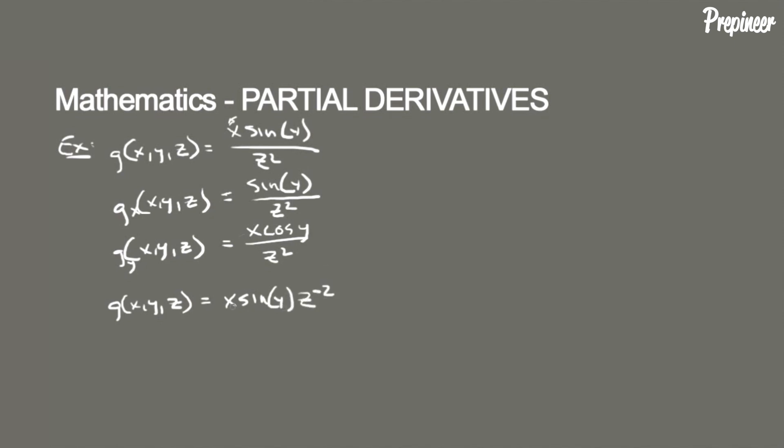Now this is simple. All we need to do is find the partial derivative with respect to z by just using our standard derivative rule. So we get the partial derivative with respect to z is equal to -2x·sin(y)·z^(-3), which also can be rewritten in the quotient as -2x·sin(y) divided by z³.